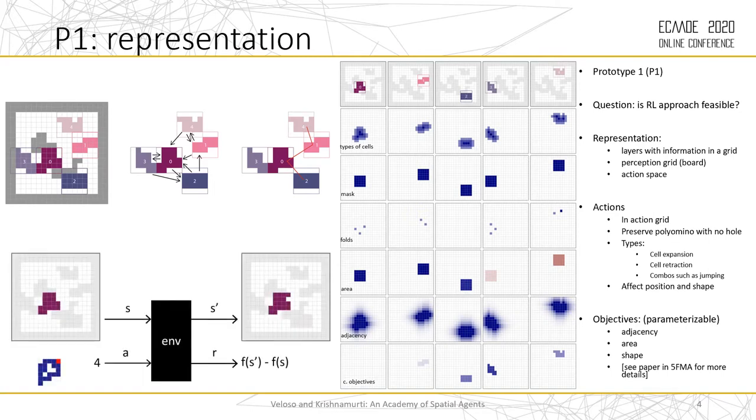In terms of objectives, we use adjacency, area, and shape. By shape, we are referring to the attempt of the agent to try to minimize the number of folds in the shape. The agent is trying to be like a rectangle with no folds. If it's an L shape, it will have one fold. This example here has two folds and so on.